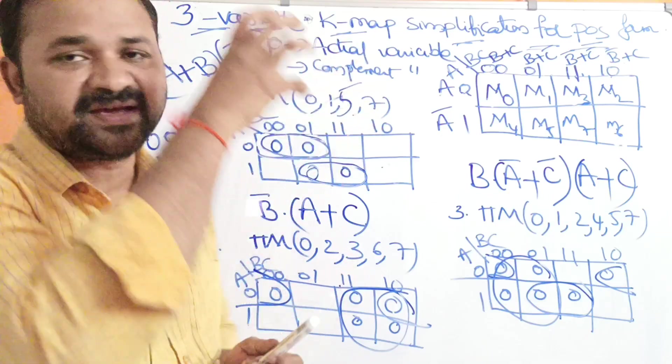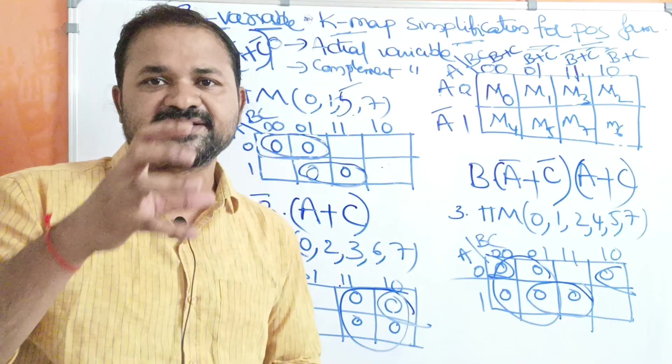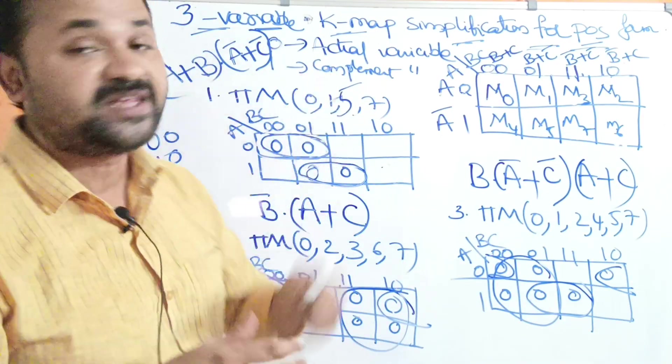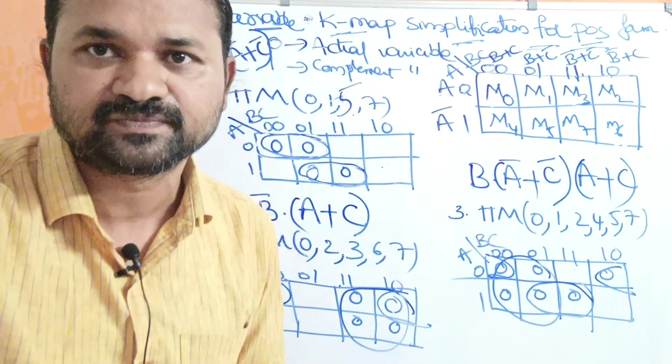Likewise we can solve any POS simplification problem. In the next video we will discuss how to simplify expressions in POS form with the help of a four-variable K-map.